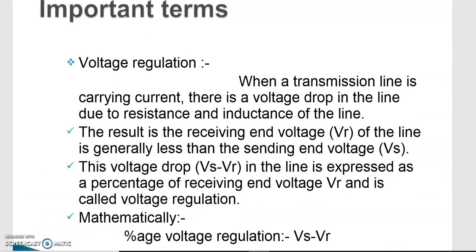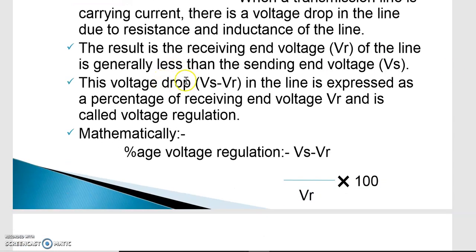Now we have to talk about important terms during modeling of a transmission line. First is voltage regulation. When a transmission line is carrying current, there is a voltage drop in the line due to resistance and inductance. The receiving end voltage Vr is generally less than the sending end voltage Vs. This voltage drop — sending end voltage minus receiving end voltage — expressed as a percentage of receiving end voltage Vr, is called voltage regulation. The formula is: Voltage Regulation = (Vs − Vr) / Vr × 100.